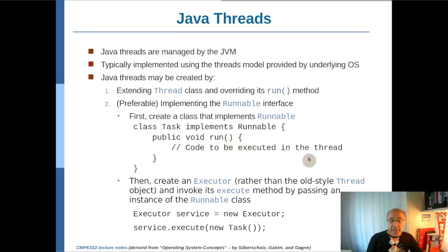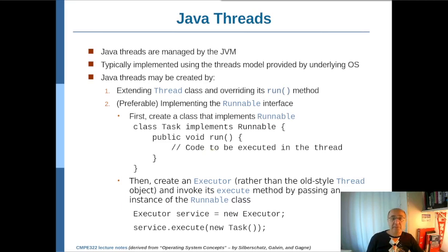Inside this method, whatever you write is the code to be executed by the thread. You could be calling other methods from the run method, but the thread starts with the run method. Then, according to the older style, you would be creating an object of the thread class.